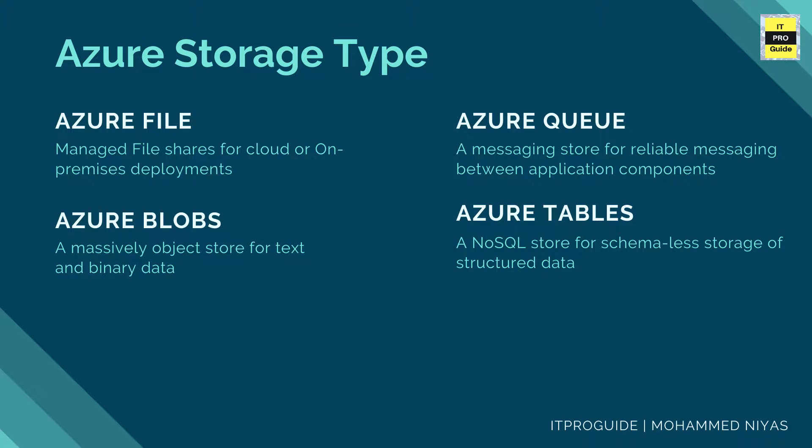Let us start from the available types of Azure Storage Services. Azure Blob is our topic today. Now let us talk briefly about the other storage services. Azure File is a managed file share for cloud and on-premises deployments, which can replace or supplement our on-premises file servers. You can use this for lift and shift of your applications and file applications which use a file server for processing or storing their files.